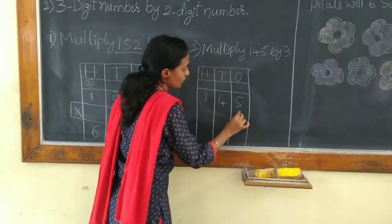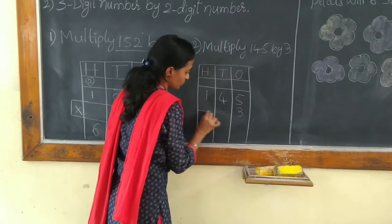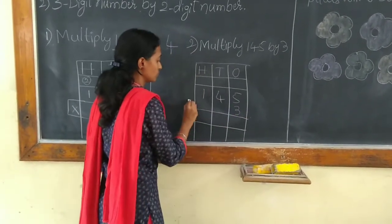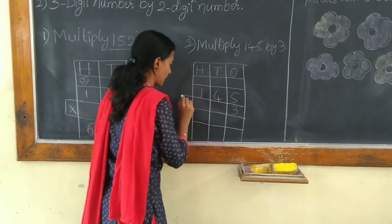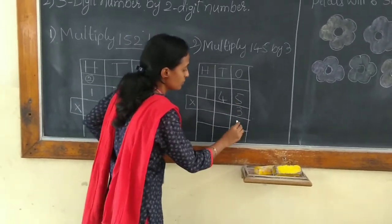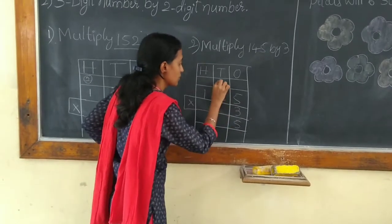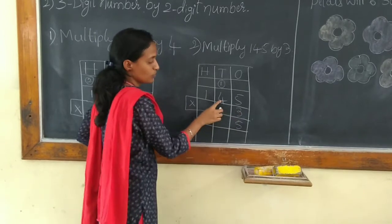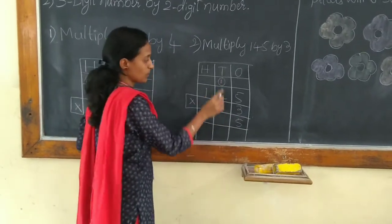145 multiplied by 3. So, multiply 3 times 5 is 15. Carrying 1 to place at the 10's place. Now, 3 times 4 is 12. 12 plus 1 is 13.